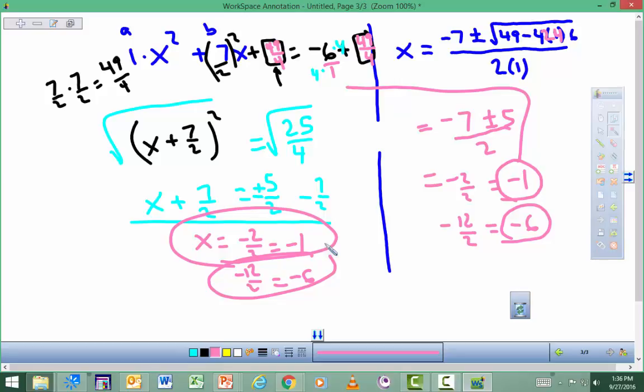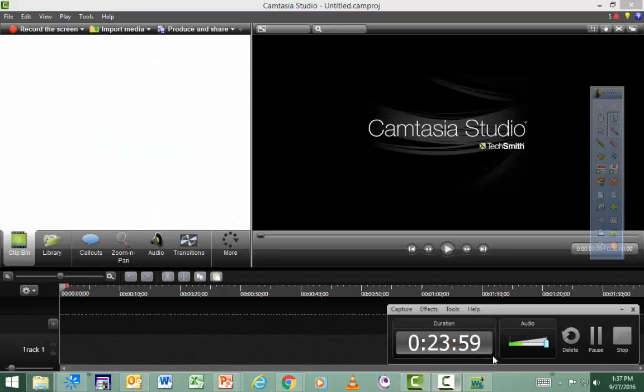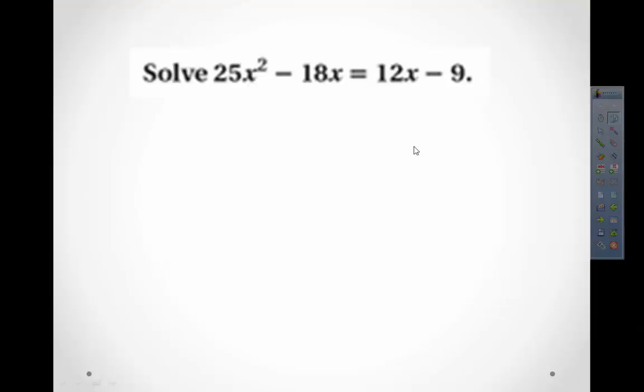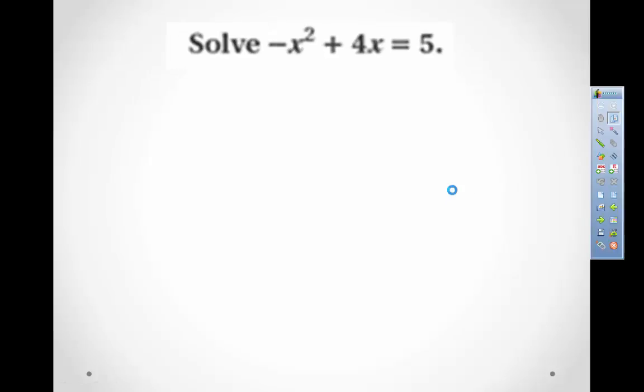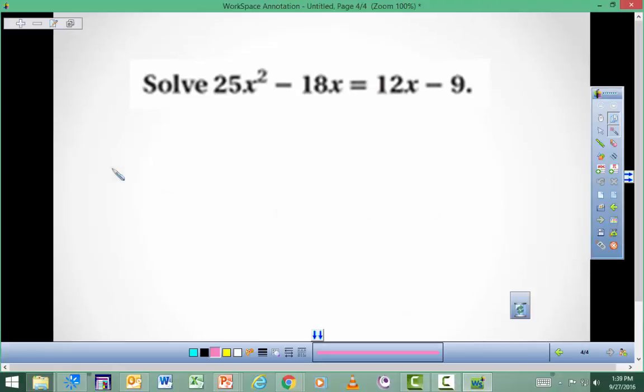Completing the square is often annoying. When it comes to the test on Friday, you have to follow directions — so when I say solve by completing the square, that's what I'm testing you on. For this next problem, the first step is to move everything to one side into standard form before using the quadratic formula. Subtract 12x and move the 9 over to get 25x squared minus 30x plus 9 equals zero.